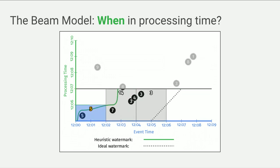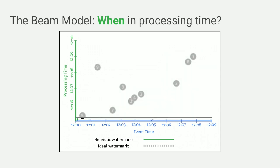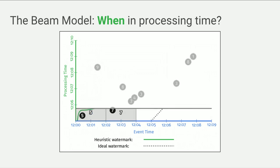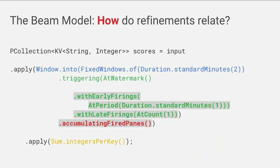In this case, we made one mistake — our heuristic was not great. Element number nine was delayed more than expected, so the heuristic was wrong. To deal with this and build a correct system, we answer the fourth question of the Beam model: how do refinements relate? We make another one-line change to instruct the system to output a correction for each late element it sees — late firings at count one. For every late element we see, we output a correction.